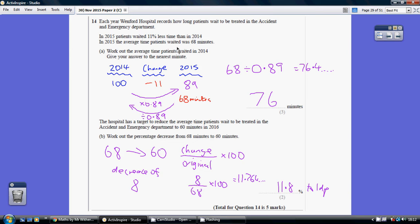Now we're told the average waiting time in 2015 was 68 minutes. So that slots into this column. We want the value here. So 68 divided by 0.89 gives us 76.4... which is 76 to the nearest minute.